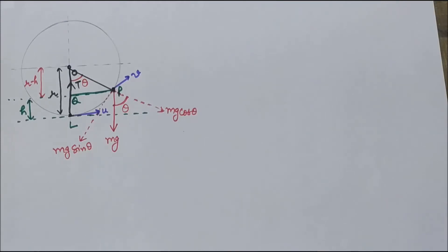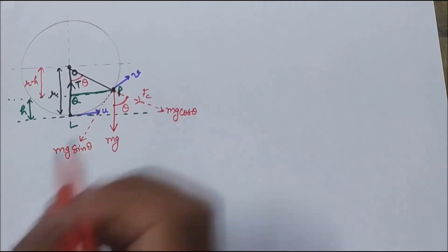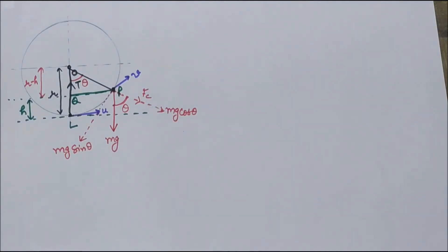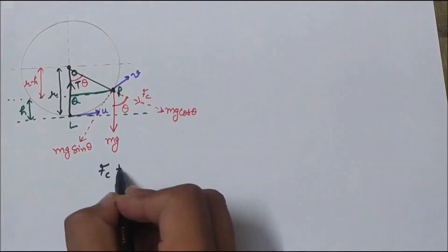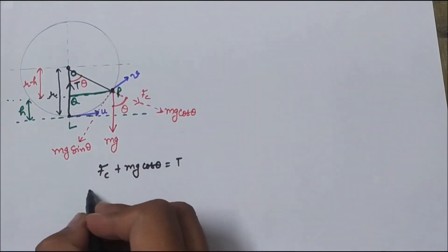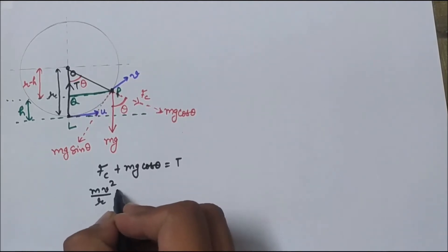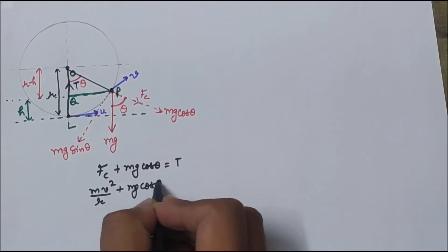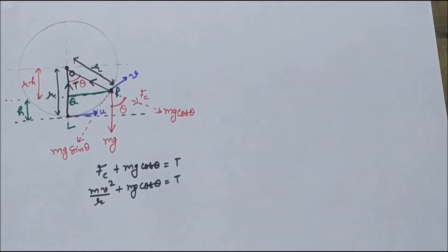The centrifugal force acts outward. Centripetal force is the net force acting on the particle which binds it towards the center, and we are talking about centrifugal force. In reality both forces have the same magnitude, that is mv² upon r, where r is the radius of the path. So centrifugal force plus mg cos theta balances the tension T. Thus mv² upon r plus mg cos theta equals T. The length of rope is equal to small r.